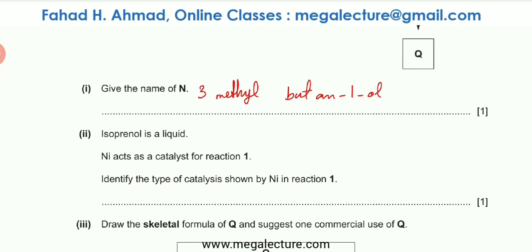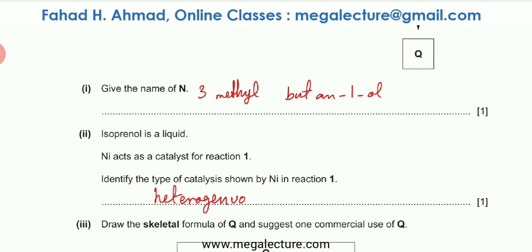Nickel acts as a catalyst for reaction 1. The type of catalysis is heterogeneous catalysis, because nickel (a solid metal) has a different physical state from the reactants — isoprenol is stated to be a liquid.